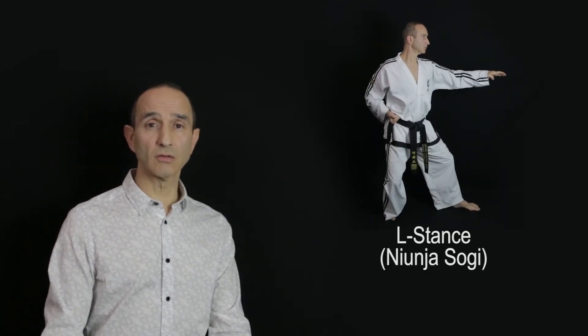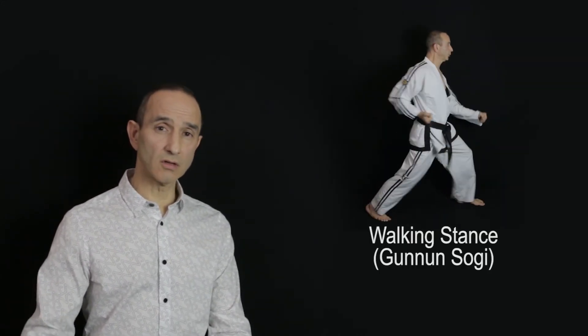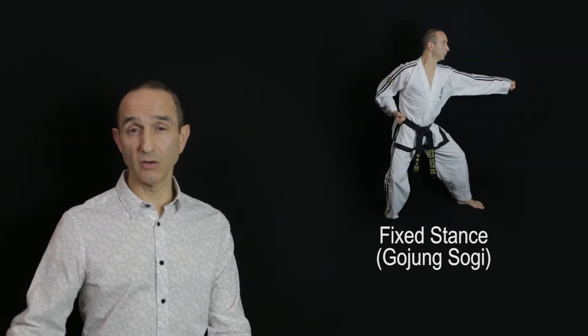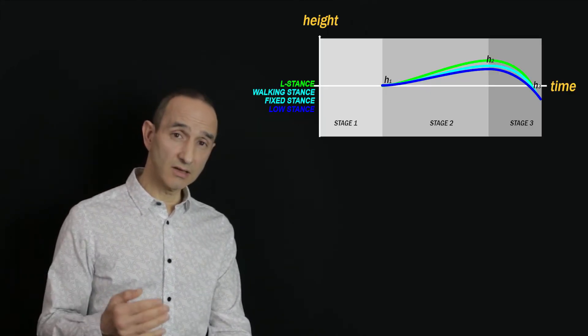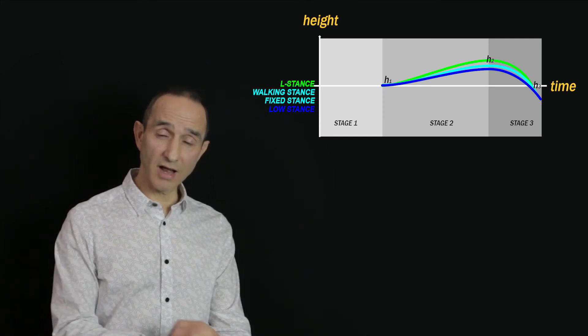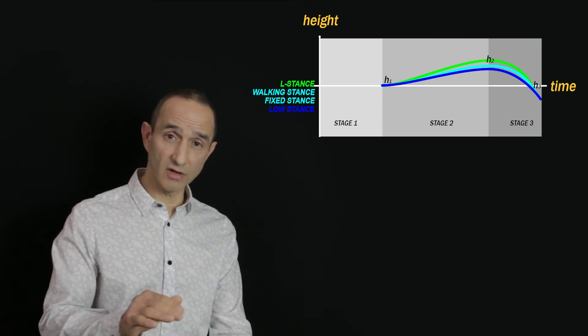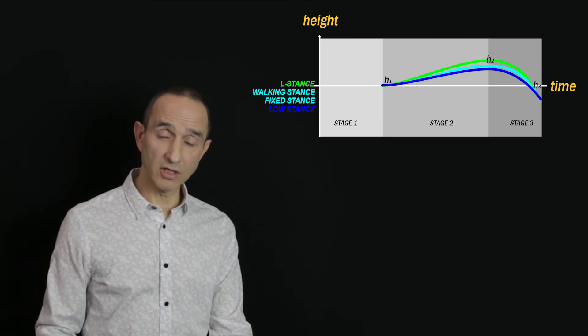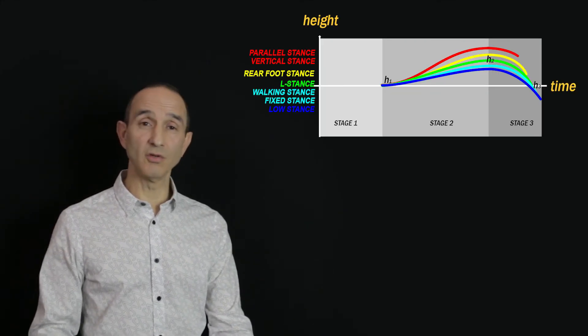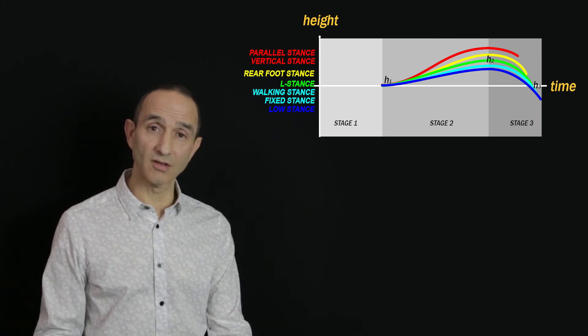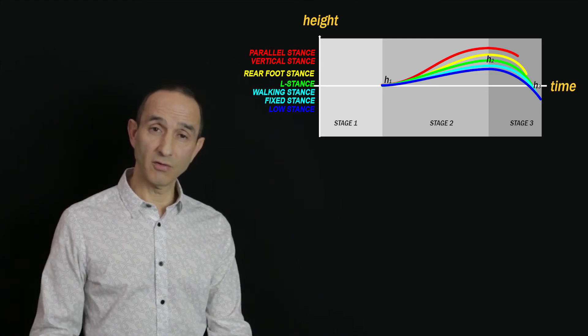If you're doing L stance, walking stance, fixed stance, or low stance, these stances get progressively longer and it's harder to go higher, so the value of H2 will be progressively lower for each of those stances, as is the value of H3. The value of H2 is always going to be higher than the value of H3, because that's the point of sine wave — you need to drop into the stance as you perform the technique.